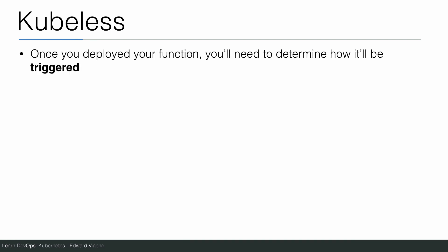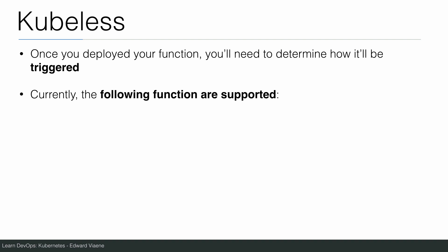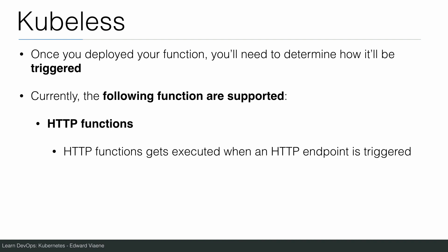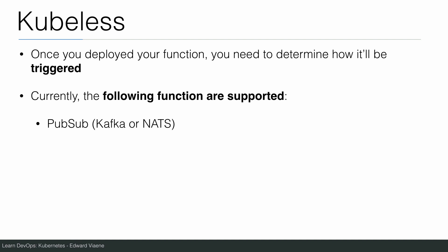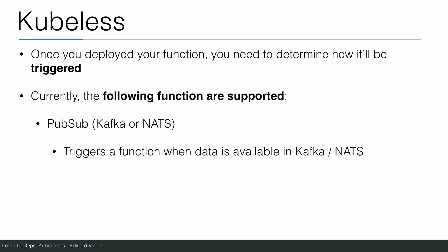Once you deploy your function, you will need to determine how it will be triggered. With AWS Lambda, for example, you use the API Gateway to have it triggered using a URL — you can do the same with Kubernetes and Kubeless. Currently the following trigger types are supported: HTTP functions, which get executed when an HTTP endpoint is triggered — you write a function and return text or HTML to display in the browser, and Kubeless uses the Ingress controller for this. You can also have a scheduled function, where you schedule a function at a certain time. Or you can use a publish and subscribe mechanism — currently Kafka or NATS is supported — which triggers a function when data is available.